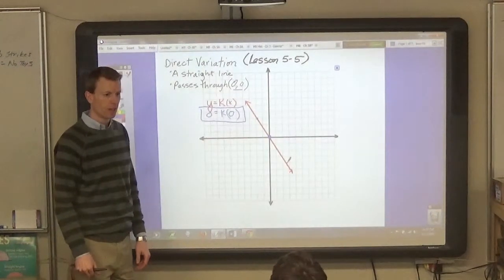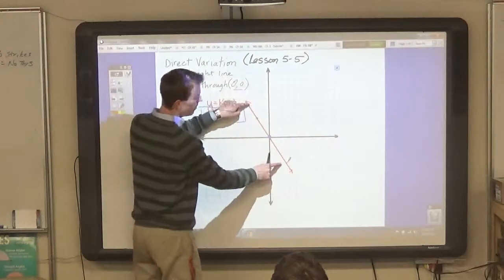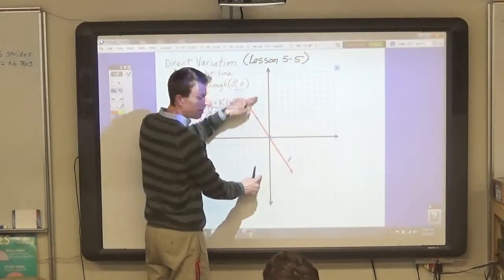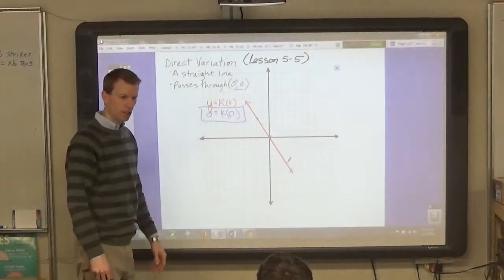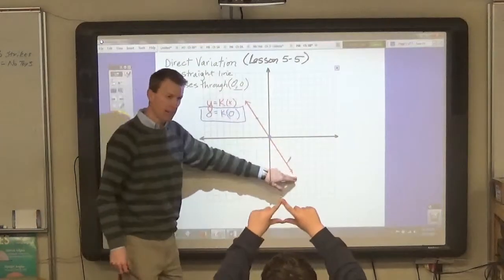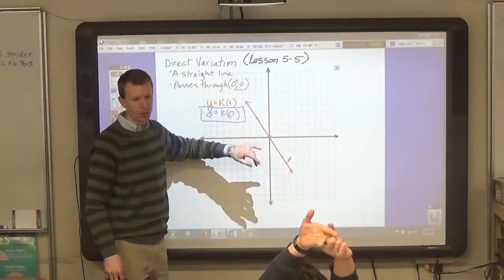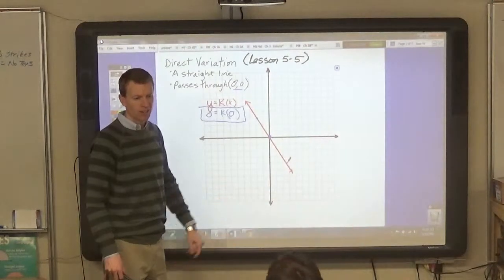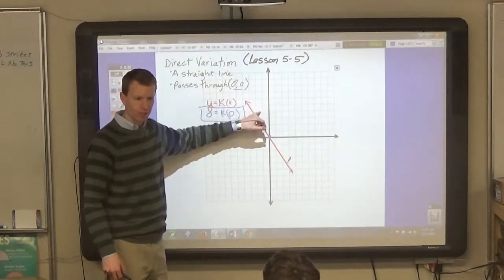The only way that it varies is that it tilts one way or the other. So anytime you see a straight line that passes through 0, 0...